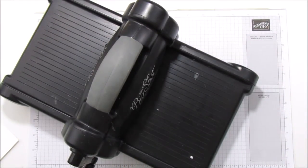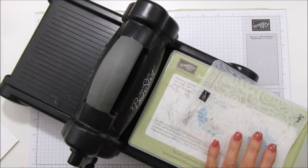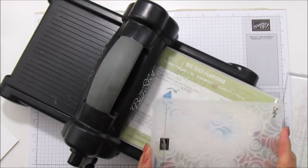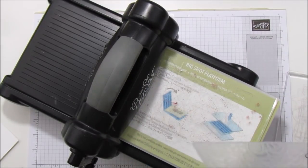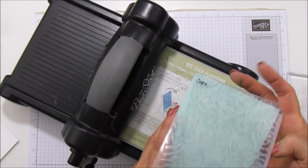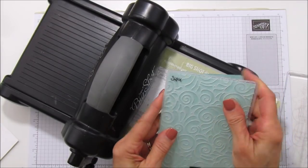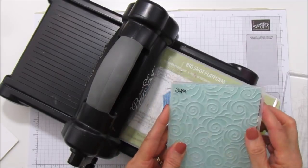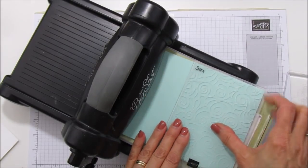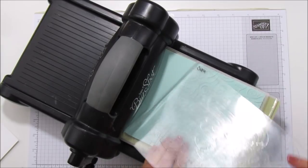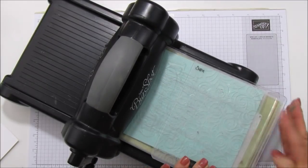So let's just run it through the big shot first and get that done. So we are going to use our magnetic platform. I'm using the swirls and curls.